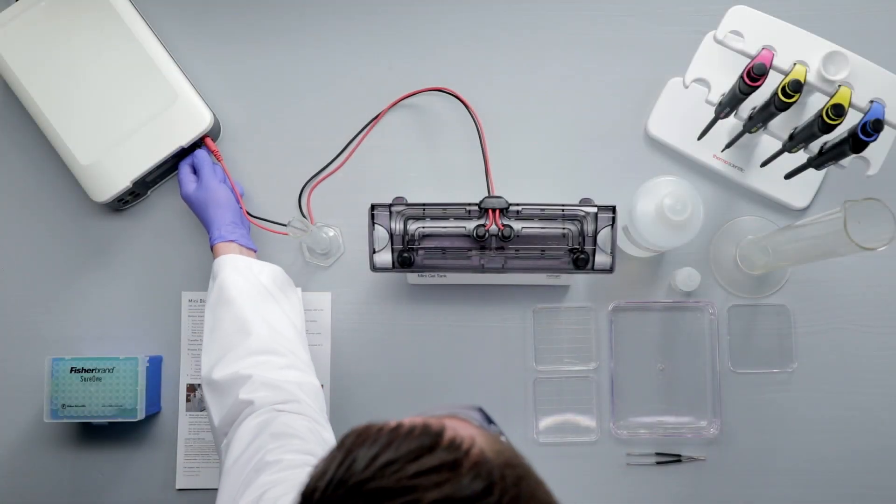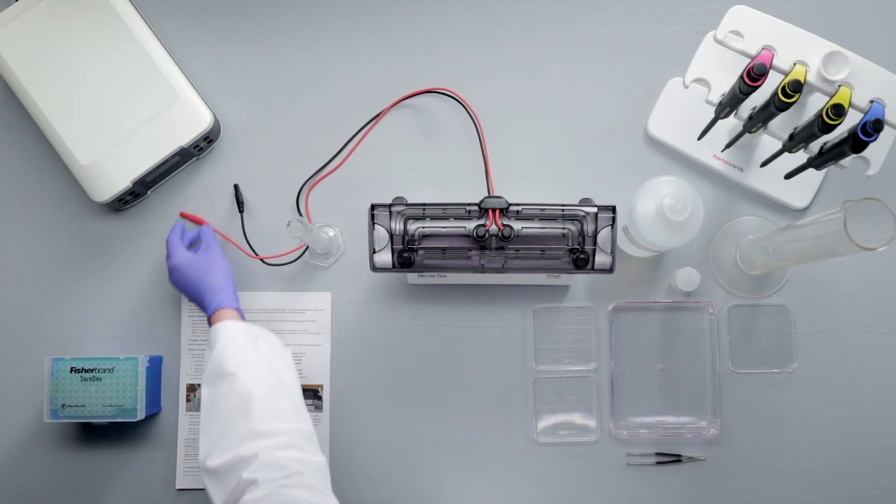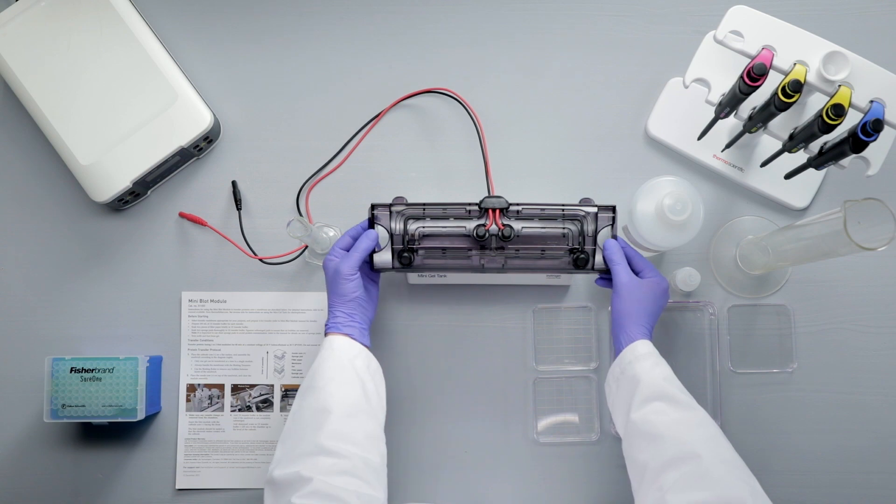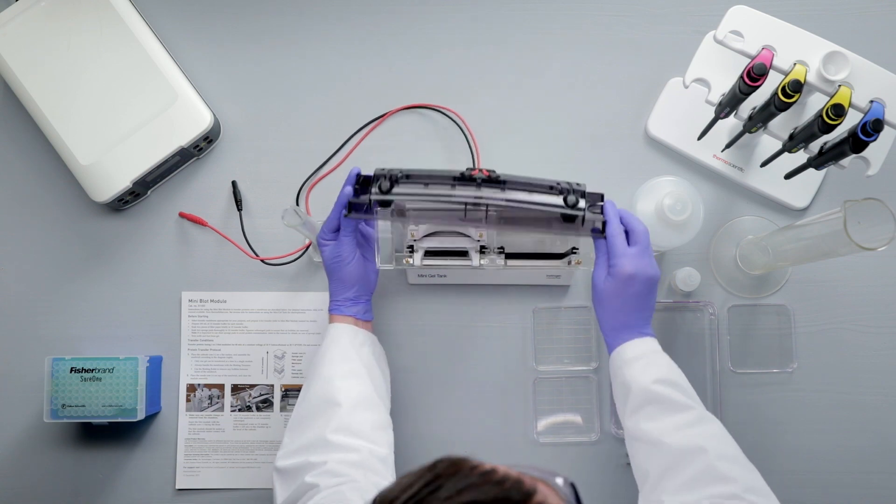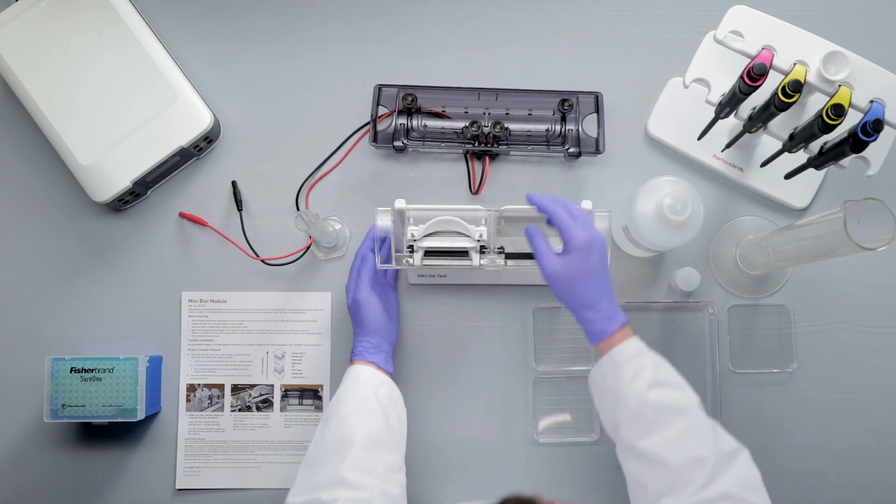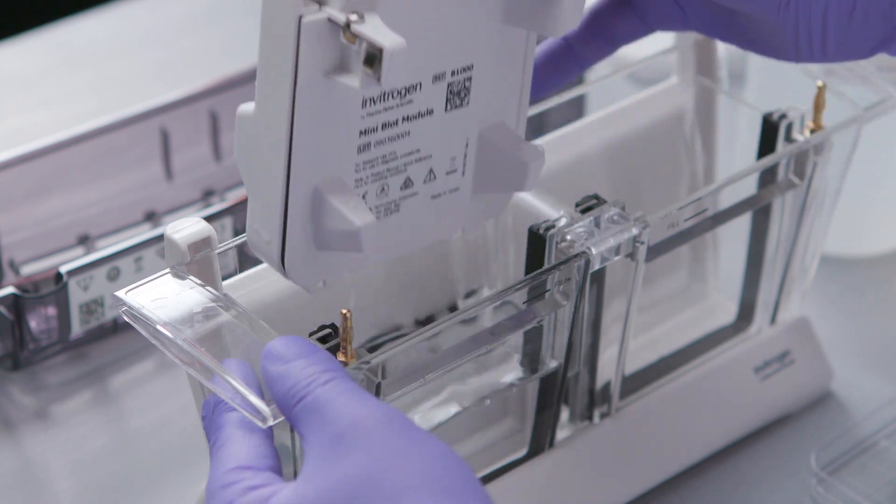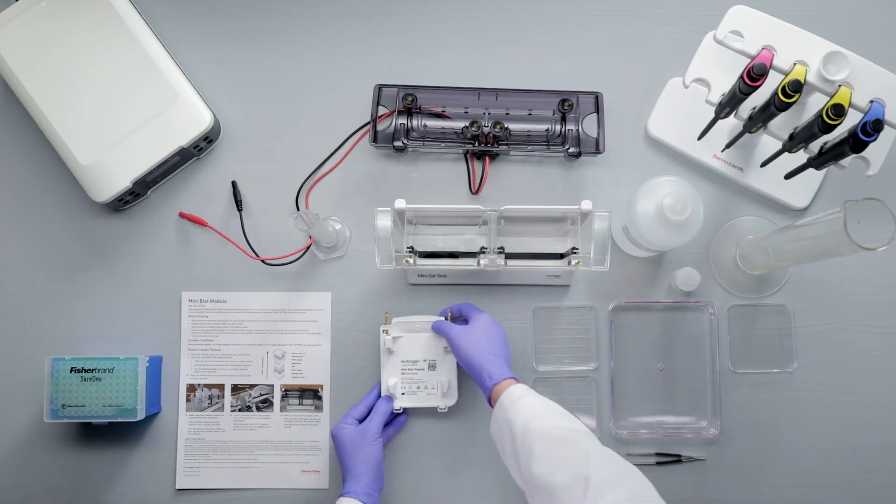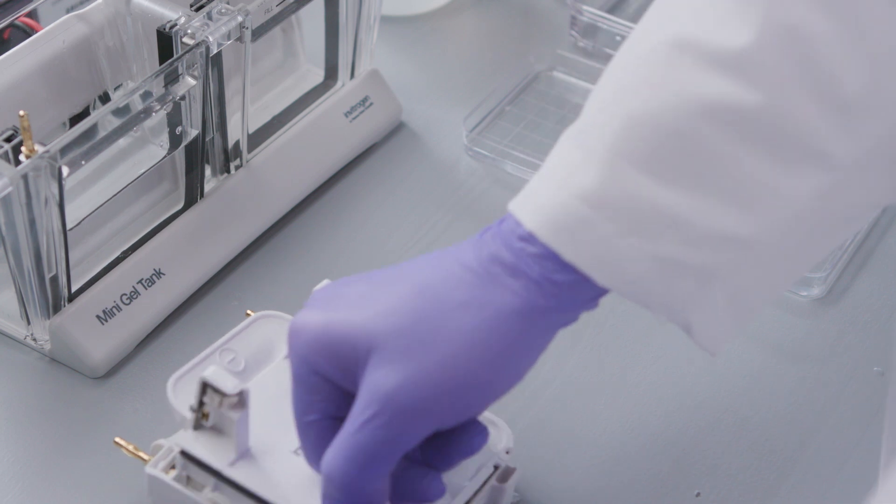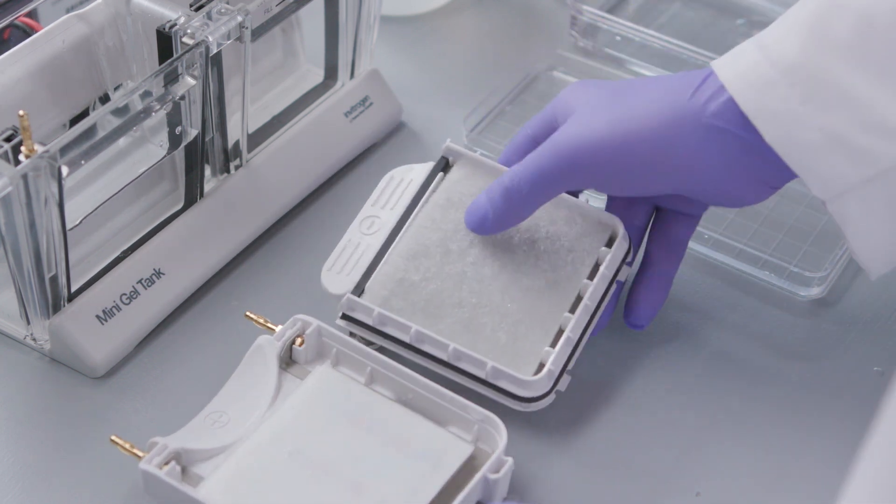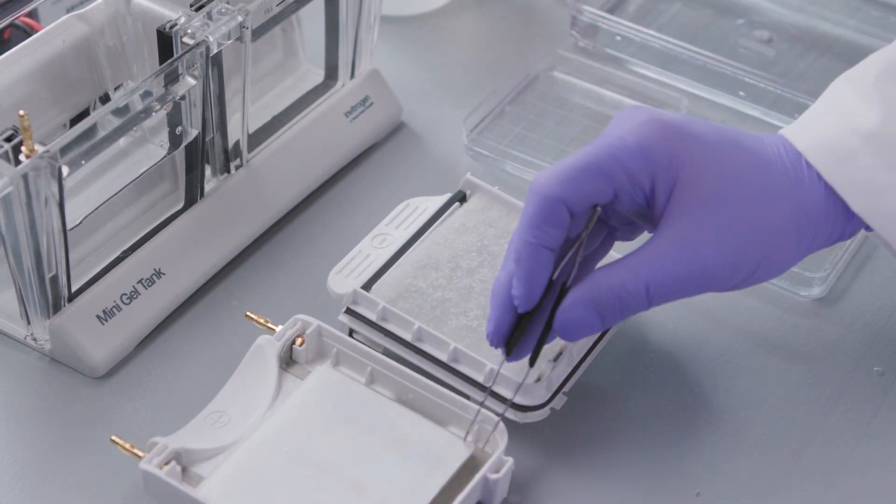After the transfer is complete, turn off the power supply, disconnect the cords, and remove the lid by placing your thumb on the tank handles and pulling the lid up with your fingers. Remove the module, pour out the buffer, and disassemble the module. Remove the membrane using tweezers.